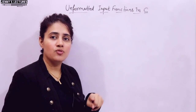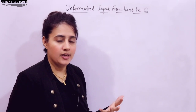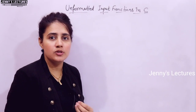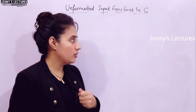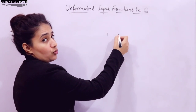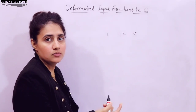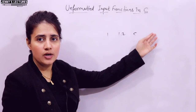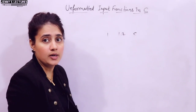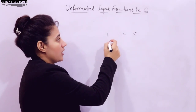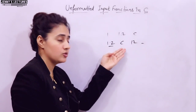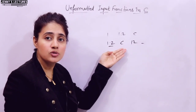What does formatted and unformatted mean? Formatted means the output has been arranged in a particular format — you can arrange your output according to your requirement. Suppose I want to take first an integer like 1, then a float value 1.2, then a character value, then a string value — you can arrange and take data in this format using the scanf function only.